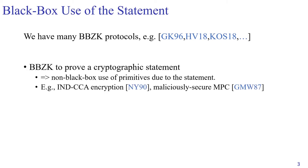However, once you want to use the zero knowledge protocol to prove a statement involving some cryptographic gadgets, things change. That means even though the zero knowledge protocol itself is black box, once you write on such a statement, you are bound to make non-black box use of the underlying primitive that is involved in that statement. This is actually a quite common situation. For example, think of the Naor-Yung paradigm or the Jain-Waters compiler. In these situations, you need to write your knowledge proof on an encryption or on a commitment. Then you have to know the code of the encryption or the commitment scheme.